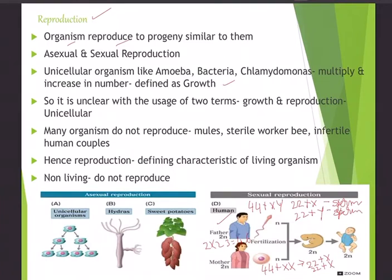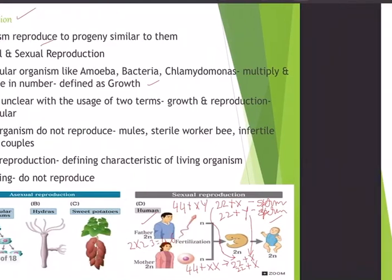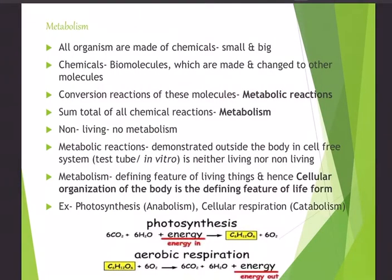When a sperm carrying 22 + X combines with an ovum of 22 + X, the result is 44 + XX — a female baby. When a sperm carrying 22 + Y combines with the ovum of 22 + X, the result is 44 + XY — a male baby. Thus diploidy is maintained. The next important characteristic is metabolism.